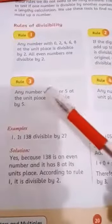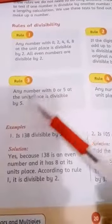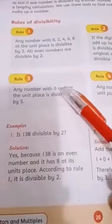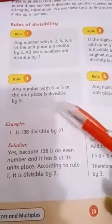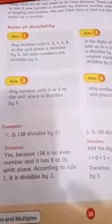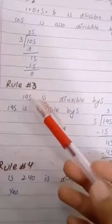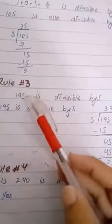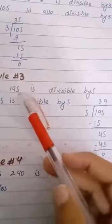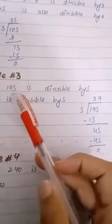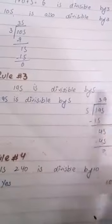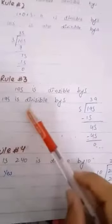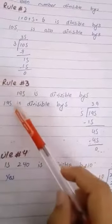Rule number 3: any number with 0 or 5 at the unit place is divisible by 5. کوئی بھی number اگر اس کے unit place پہ 0 یا 5 ہو تو وہ 5 پہ divisible ہوگا۔ For example, 195 — the unit place is 5, so it is divisible by 5.